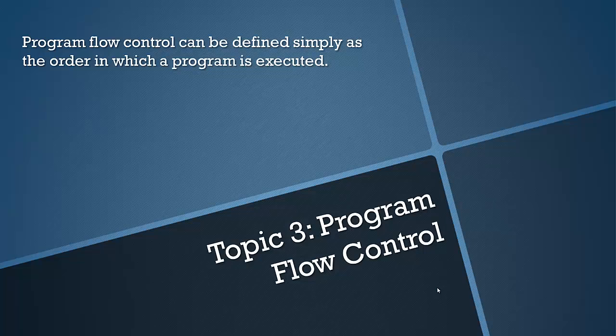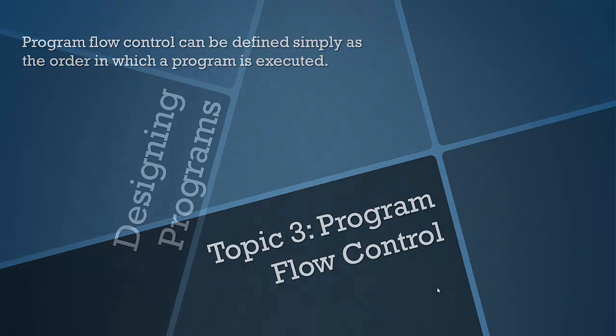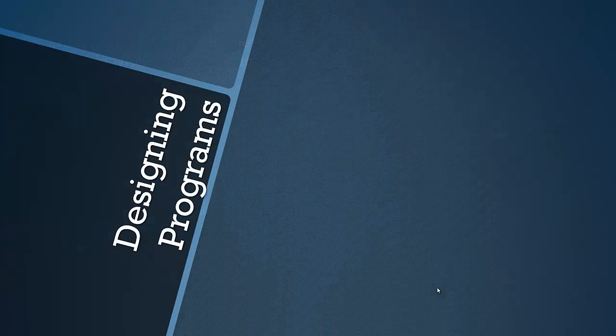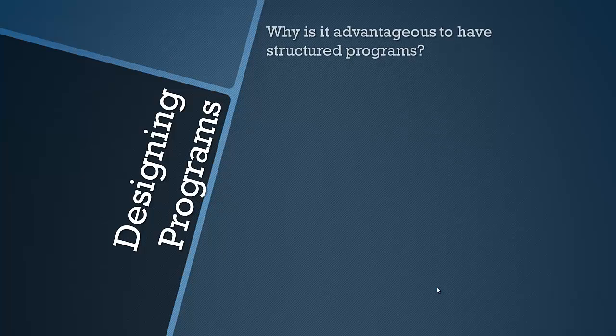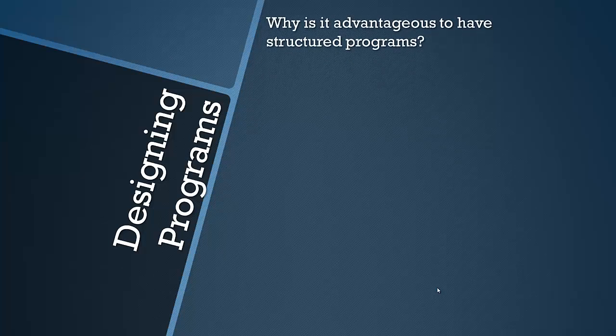Program Flow Control can be defined simply as the order in which a program is executed and the means that it is executed. There are three different ways to do this mainly, but we'll get to that later. So first let's have a look at structured programs and why it's an advantage to have structured programs.